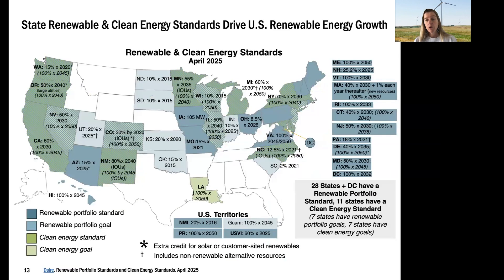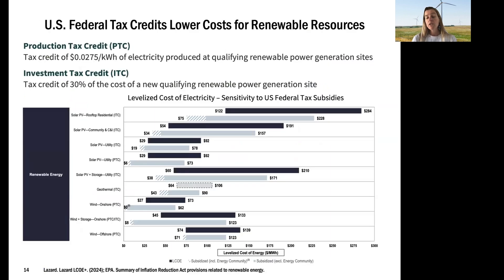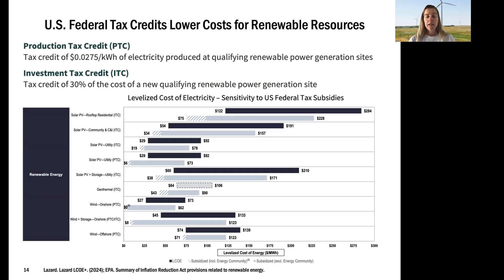A lot of the resource growth in the United States and elsewhere has been driven by policy to get things started. One key policy was a renewable portfolio standard, seen across most of the country, which drove the adoption of renewable resources in the early days. Now adoption is more and more driven by markets. Federal tax credits do really lower the levelized costs of different renewable energy resources — to the point where onshore wind is almost free and solar PV is very inexpensive — but even without those subsidies, markets are really driving the adoption of renewable resources.